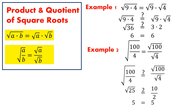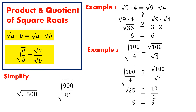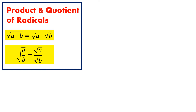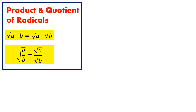These two properties are useful when we are to simplify the square root of 2,500 and the square root of 900 divided by 81. Pause this video and try this on your own. Take a look at these solutions.